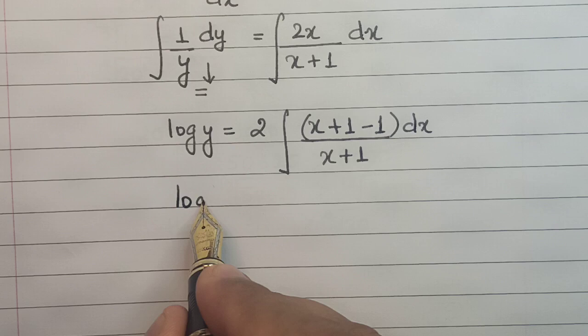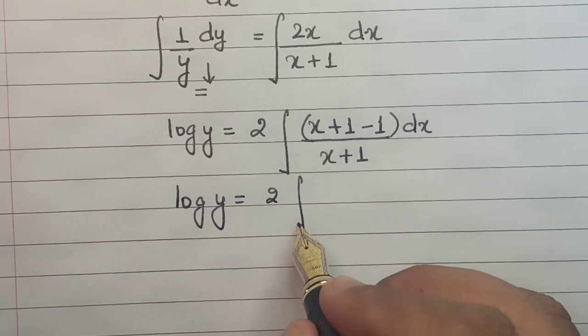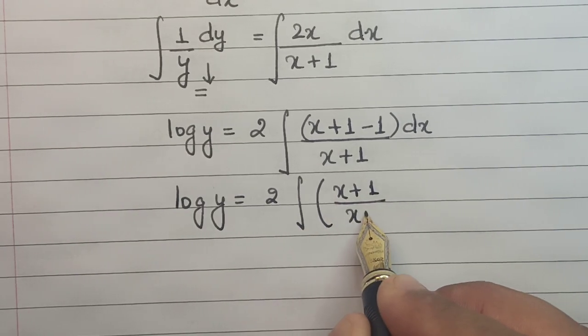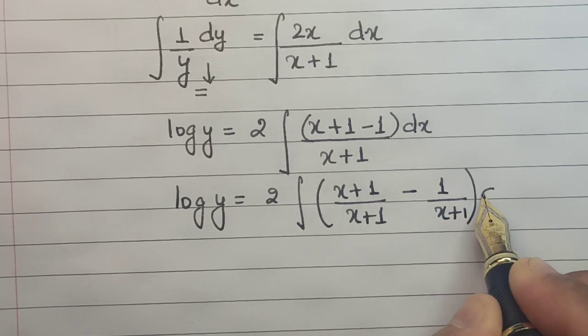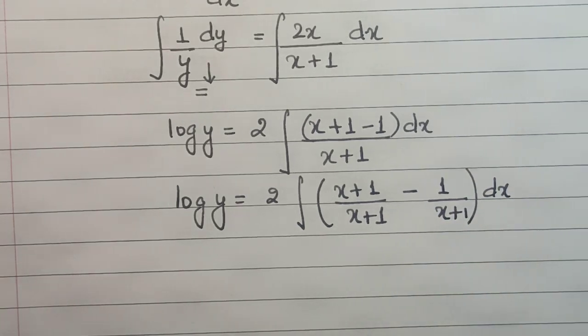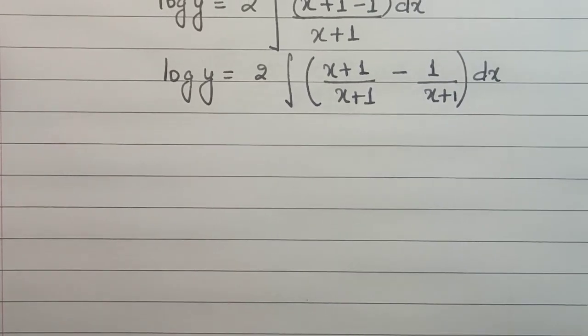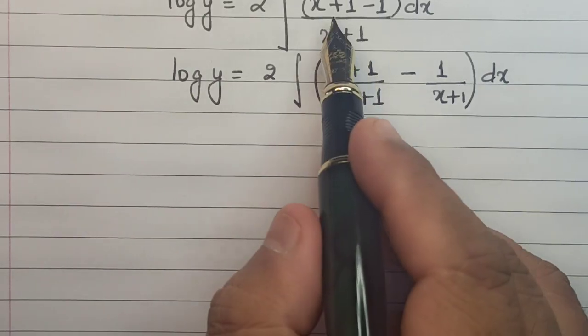In the next step this becomes log y = 2∫((x+1)/(x+1) - 1/(x+1))dx. This is the scenario now where we have successfully separated the values of x and y and adjusted the numerator.